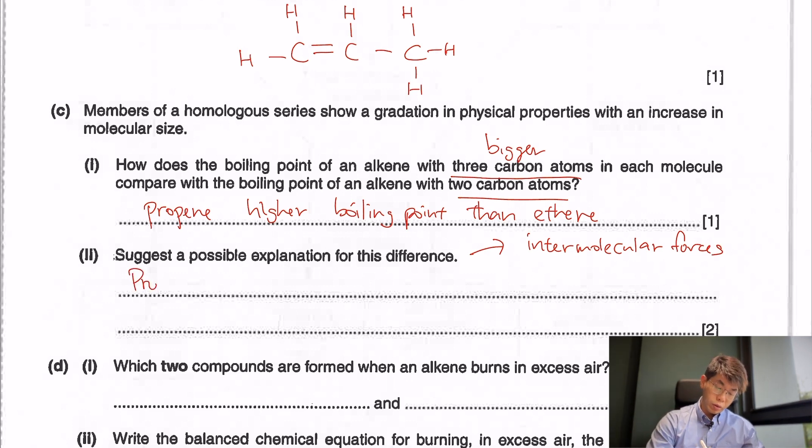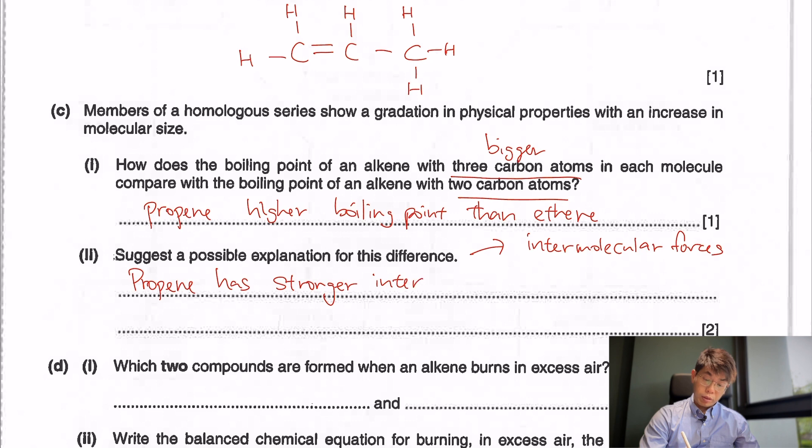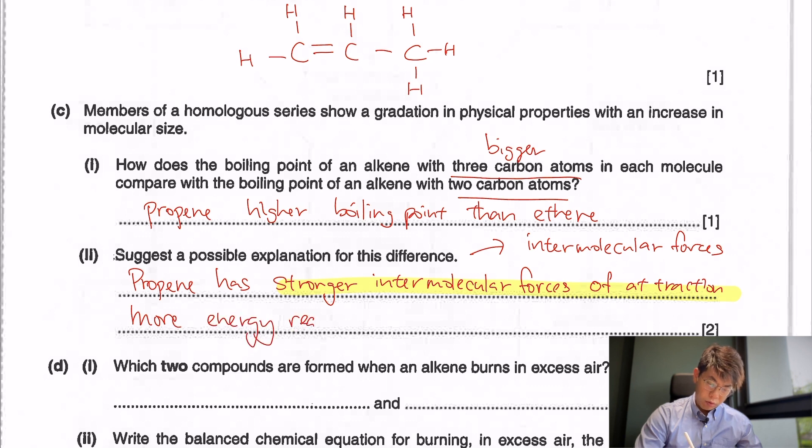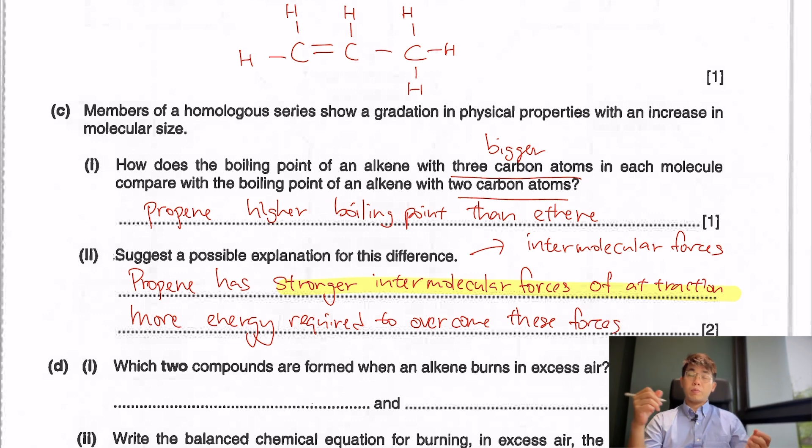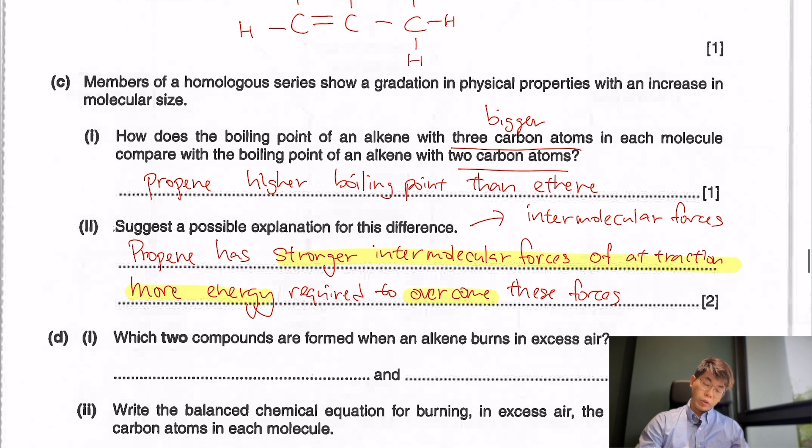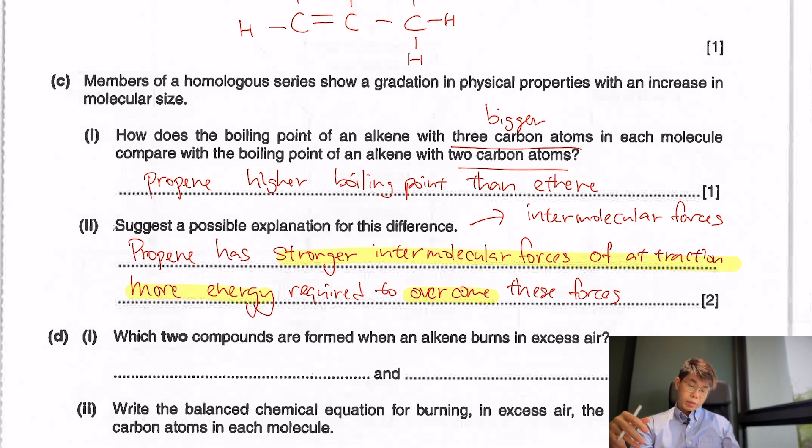We need to have an explanation. So we know that these organic molecules are molecules. And boiling point is affected by the intermolecular forces. This is from your chemical bonding chapter. If there's stronger intermolecular forces, then the boiling point will be higher. Propene has stronger intermolecular forces of attraction. Once there is stronger intermolecular forces of attraction, then more energy is required to overcome these forces. So that's why the boiling point is higher.